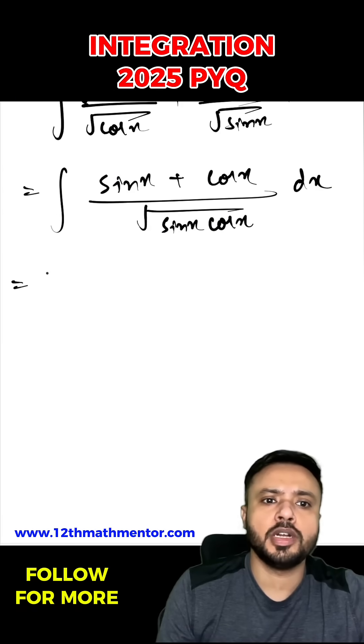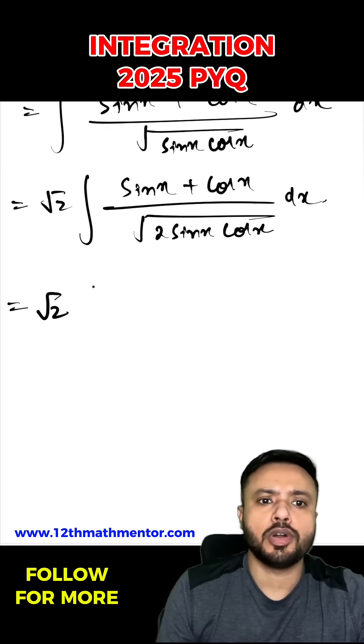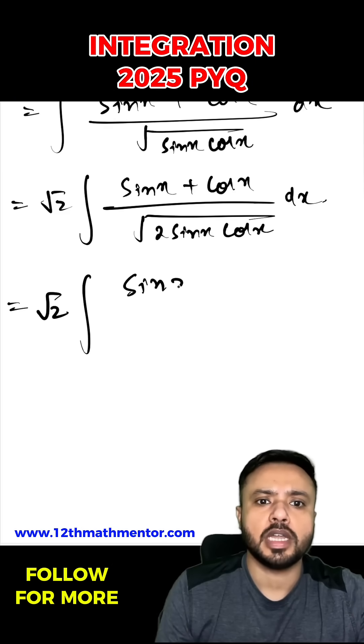Now I'm going to multiply the numerator and denominator by root 2, so I can write as root 2 sine x plus cos x by root of 2 sine x cos x. This is the most important step, so I can write it as root 2 sine x plus cos x.